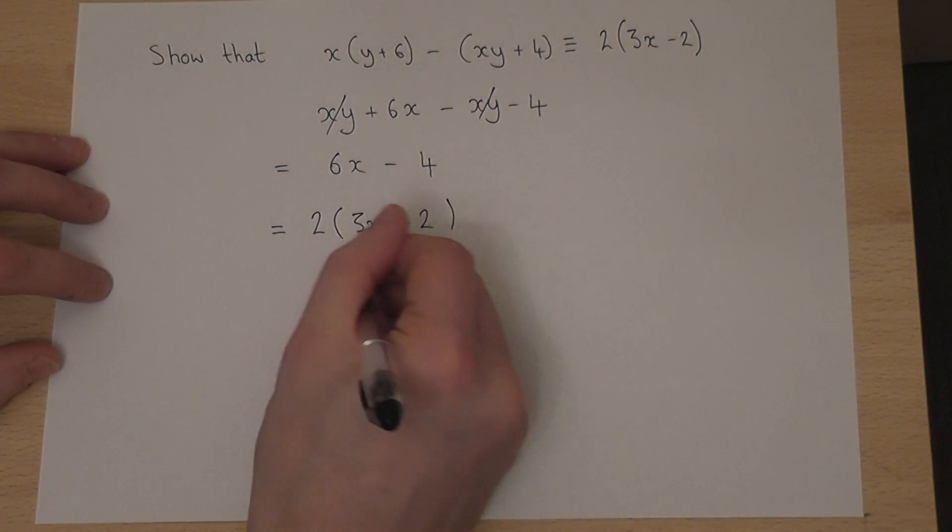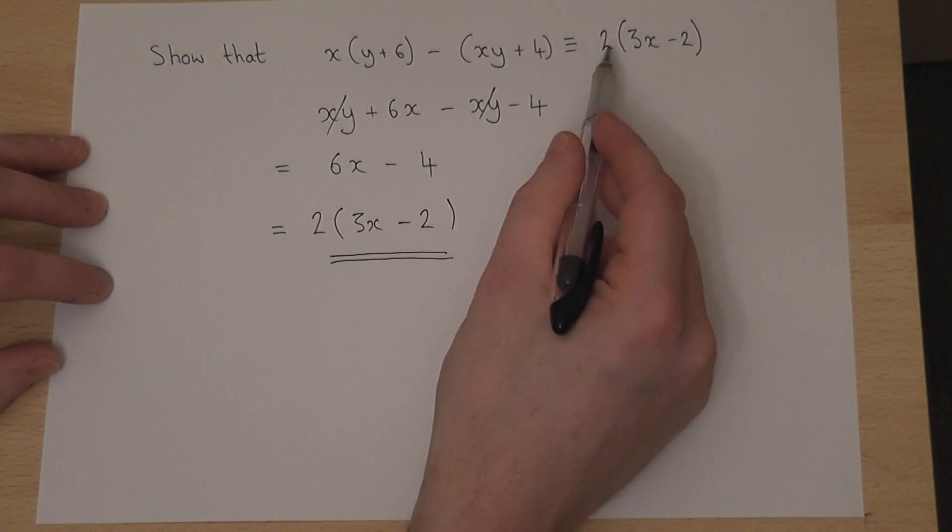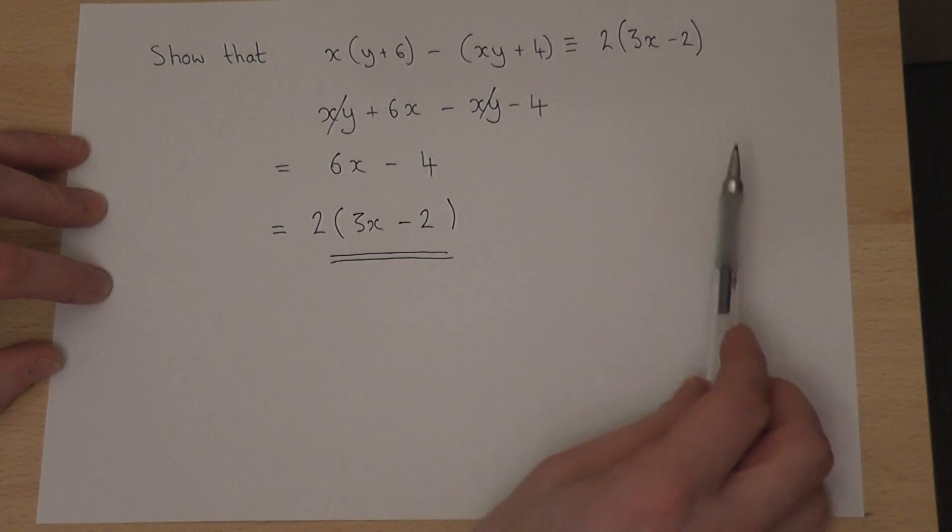So when I expand and simplify, I get the answer as required. I've therefore shown the given identity.